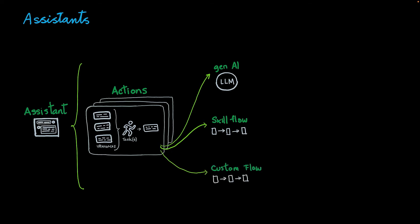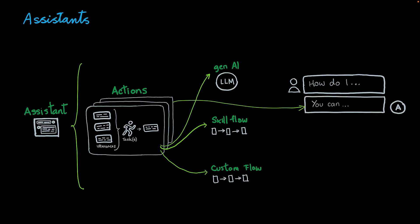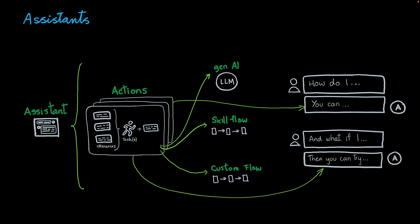Or you can create your own custom flow. If you want to perform certain functionality with information provided by the user in the conversational interface, but this doesn't necessarily involve any skill, you can put all the logic within the action itself. Once you have created the actions, you can interact with the assistant through conversation. The AI will look in the catalog of actions and come back with a response, continuing to determine the most appropriate answers based on the items included in the action.